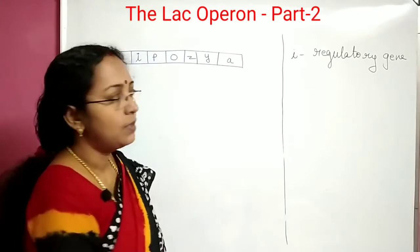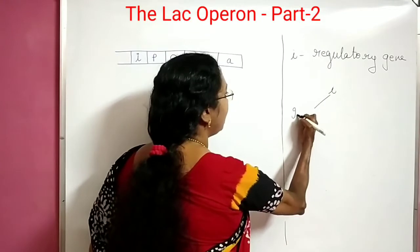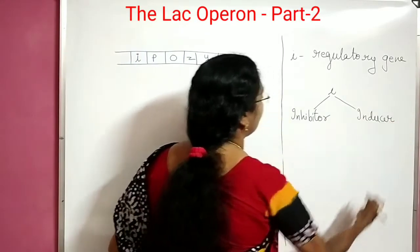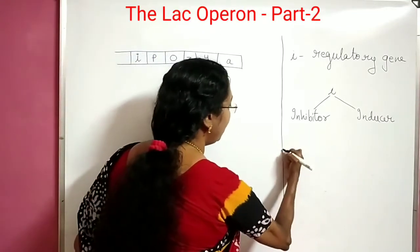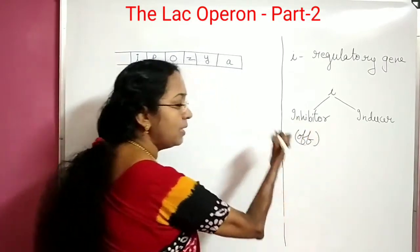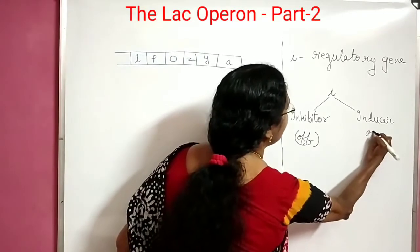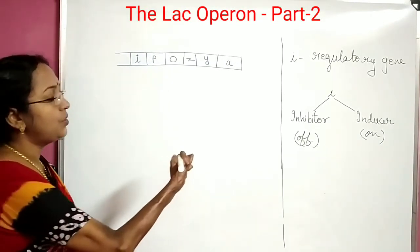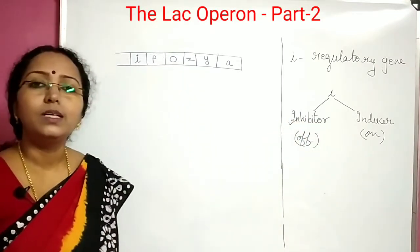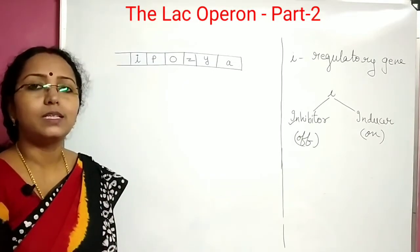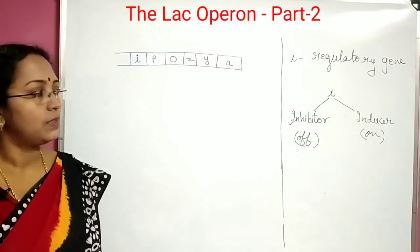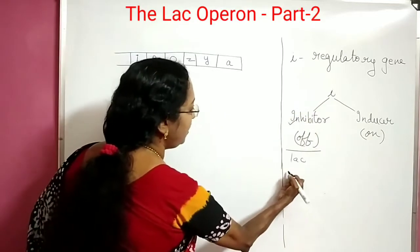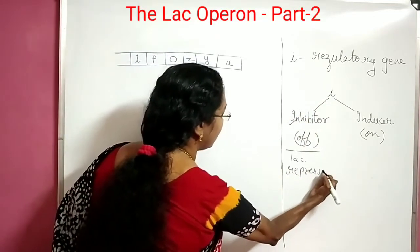In any operon, the I gene can act either as an inhibitor or as an inducer — it can produce components that switch the gene off (acting as an inhibitor) or switch it on (acting as an inducer). In the case of lac operon, this I gene acts as an inhibitor, meaning it produces a repressor protein.